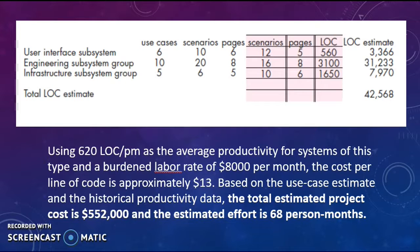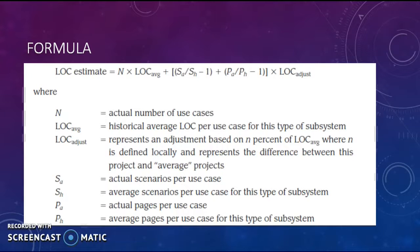The example of how to calculate LOC: first, calculate the actual number of use cases multiplied by the LOC average. Then, calculate the division of actual scenarios and average scenarios minus 1, plus the division of actual pages and average pages minus 1, and multiply with LOC adjust. Then, add the first result and the second result together to get the LOC estimation.